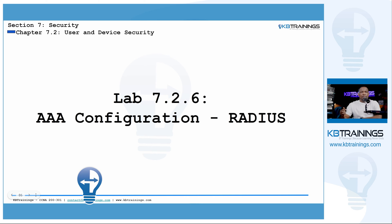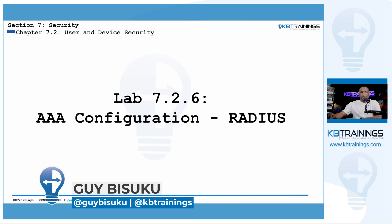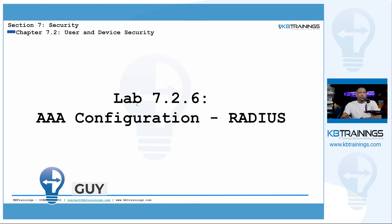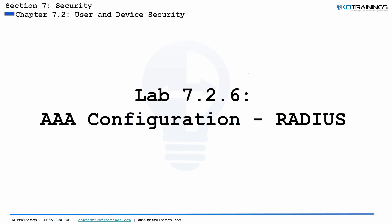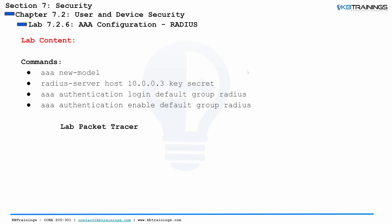Hey, what's up guys, welcome to lab 7.2.6 for our CCNA course on KB Trainings. Today we're going to do some AAA configuration, focusing specifically on RADIUS. As we saw in a previous lesson, RADIUS is one of the popular protocols used for AAA — Authentication, Authorization, and Accounting. We're going to spend some time in Packet Tracer to show you how to quickly configure RADIUS.